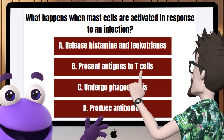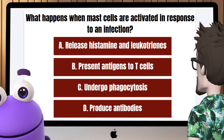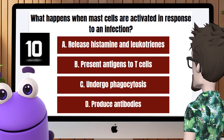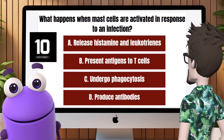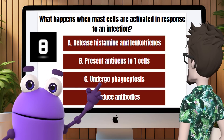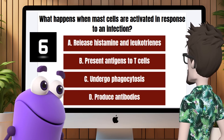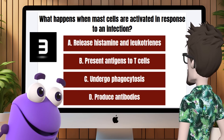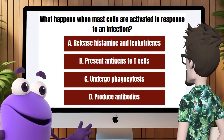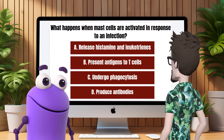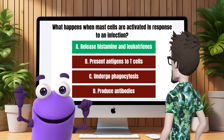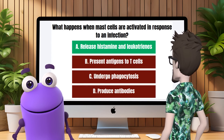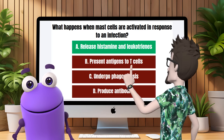Question 2: What happens when mast cells are activated in response to an infection? I know this one. A, they release histamine and leukotrienes. That's correct, Cella. When mast cells are activated, they release histamine and leukotrienes, which contribute to the inflammatory response.